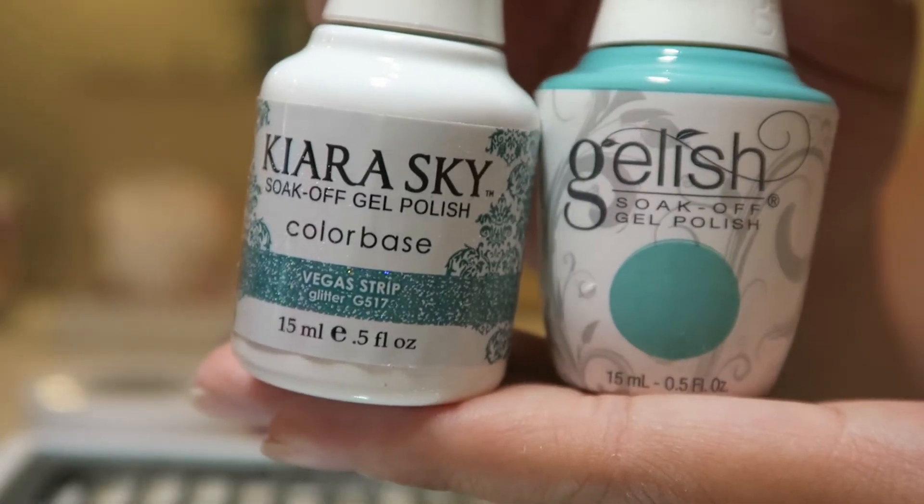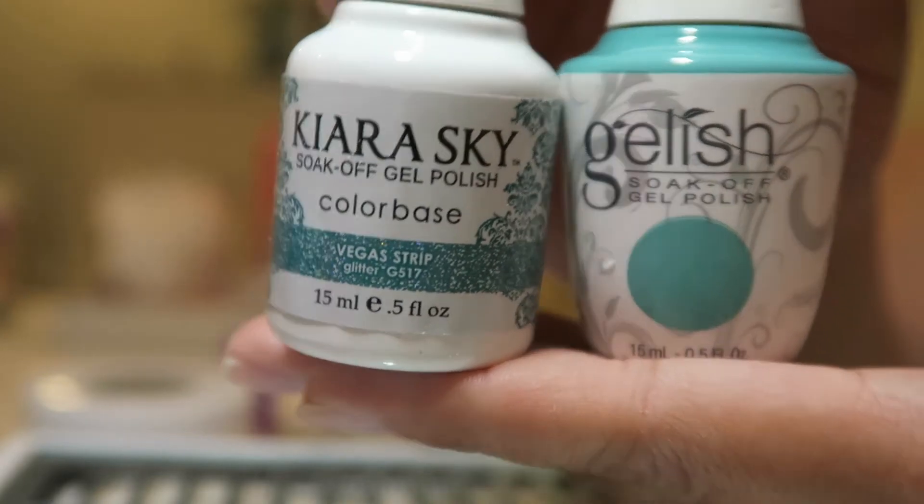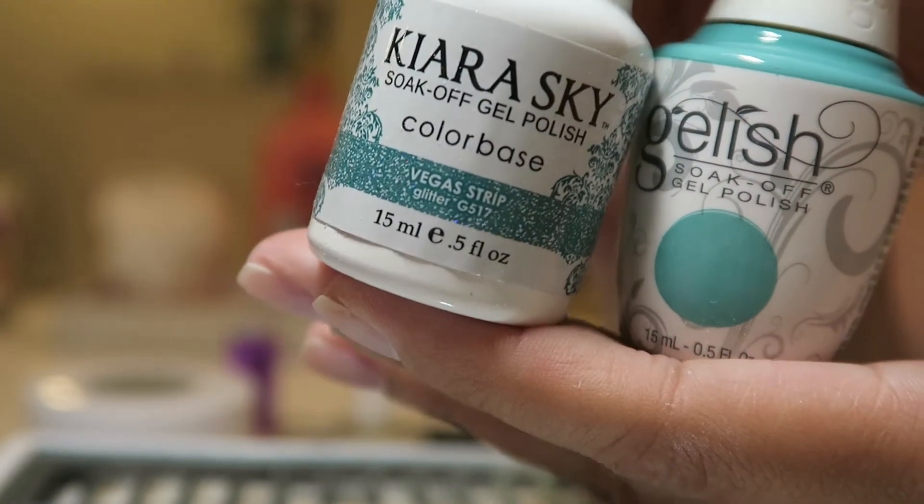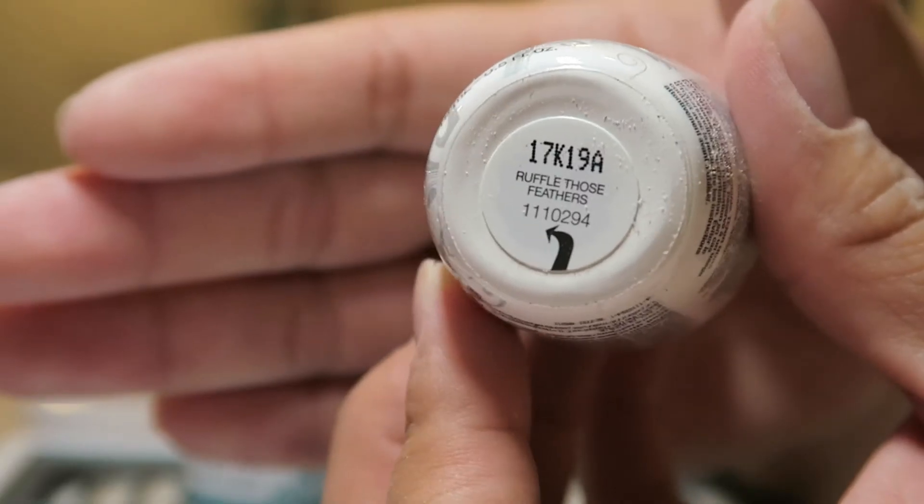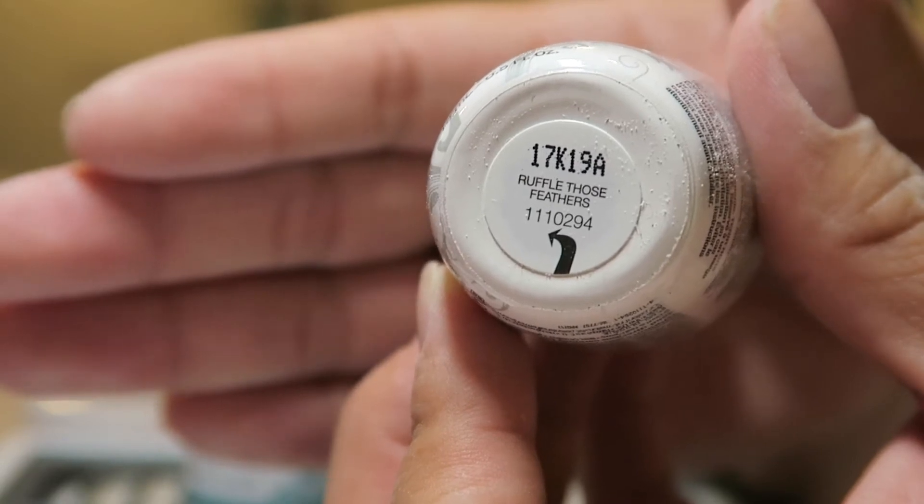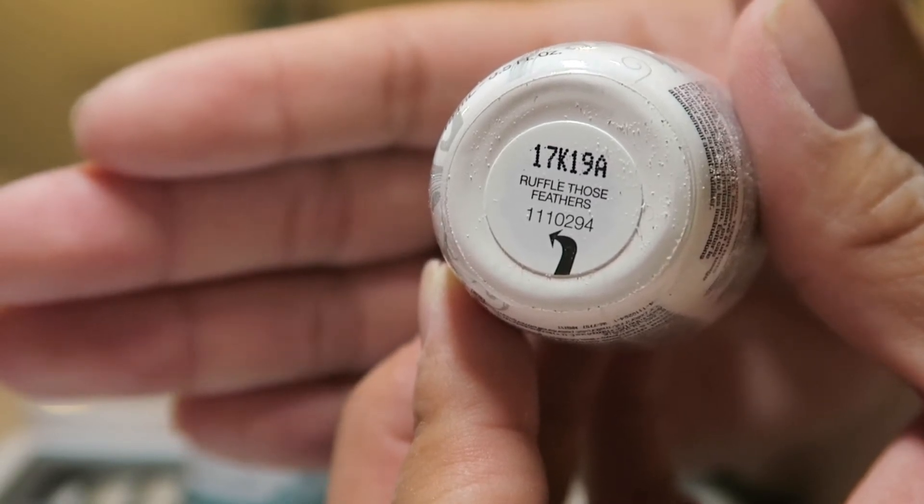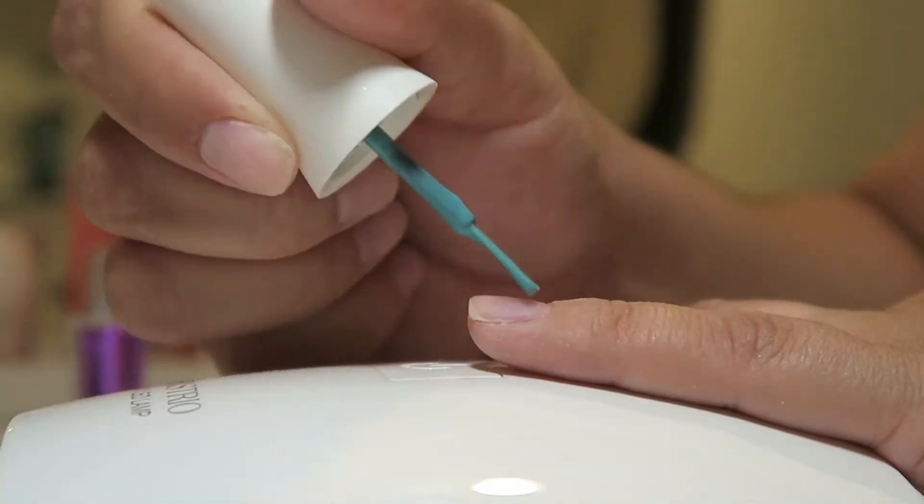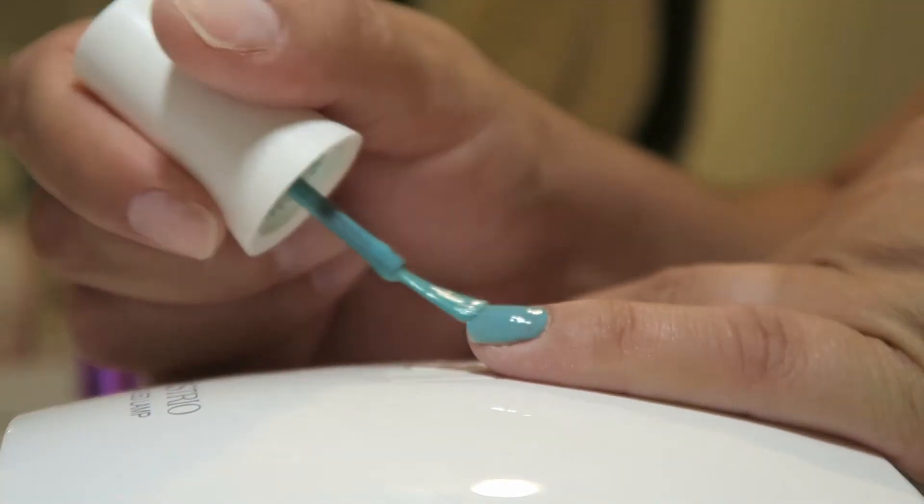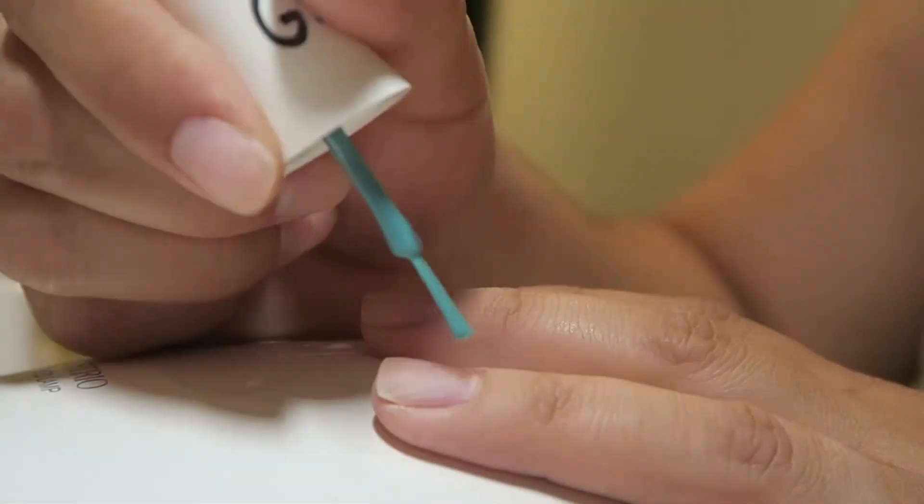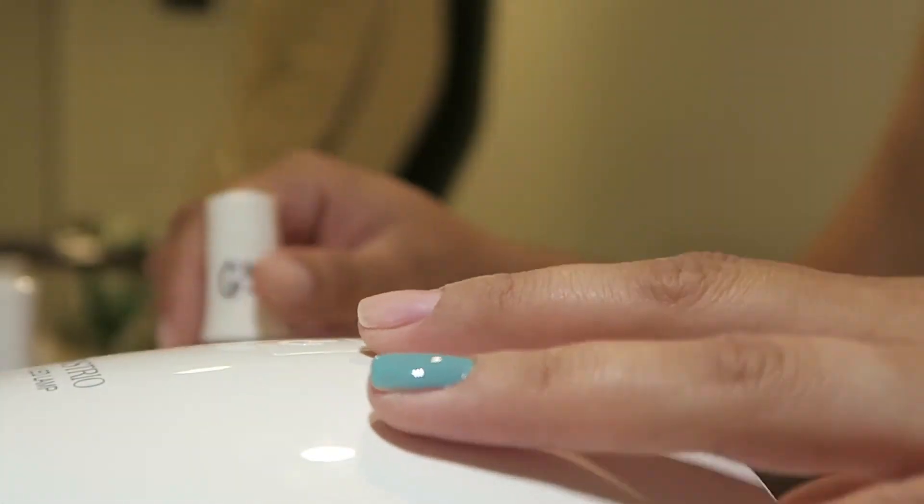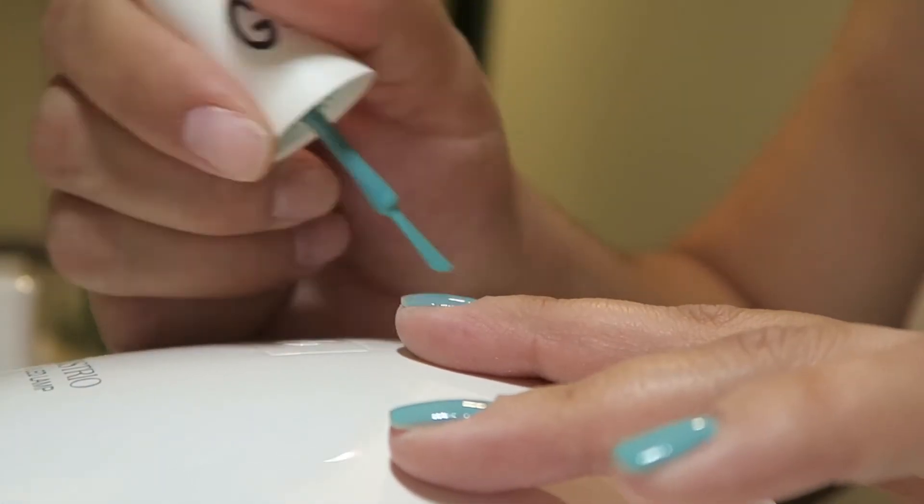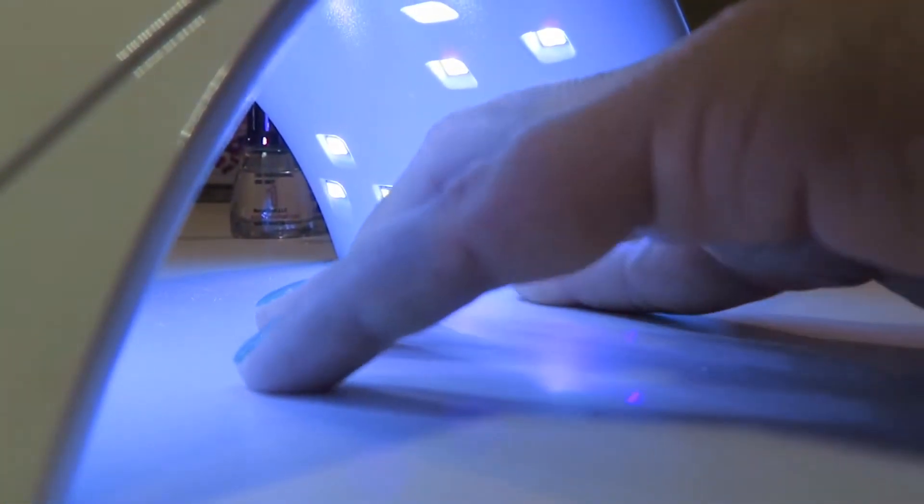Now I'm going to go in with my polish. I'm picking this super pretty blue, and then this one that has glitter. The colors are really similar. Vegas Strip is the glitter polish from Kiara Sky, and then the Gelish polish is called Ruffle Those Feathers. I'm going to go in with the solid color first and I'm just applying that all over my nail, making sure not to get it on my skin. If I do get it on my skin, I like to clean it off right away because when you cure it, it's going to get stuck. I like to just make sure all the edges are perfect and clean.